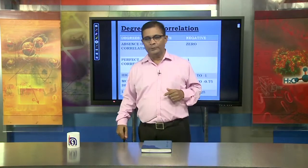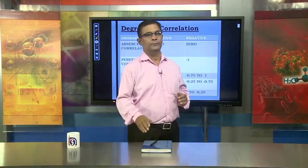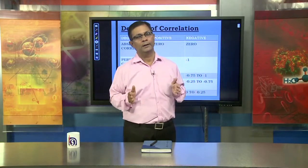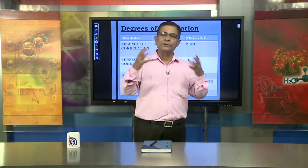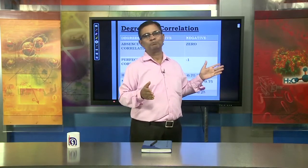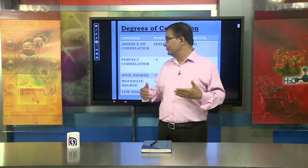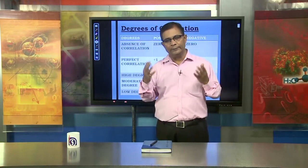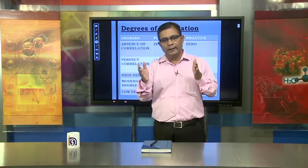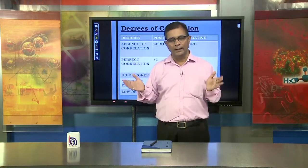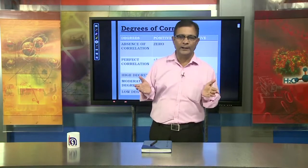Now let us discuss the degrees of correlation. The study of the relationship between two variables is called correlation. How do we understand whether there is positive or negative correlation, and to what extent are they associated? We see from this table that no correlation — absence of correlation — has a value of 0. Whenever we calculate and find the value is 0, we conclude that no relationship of any kind is found between the two variables.